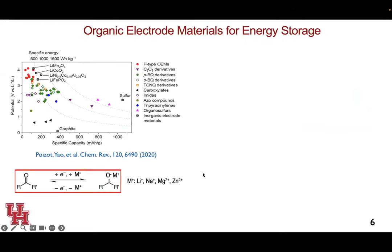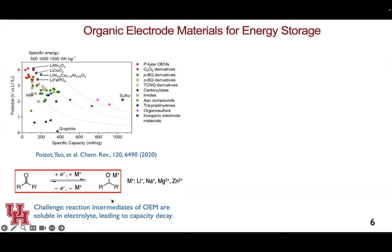The real challenge is how do we integrate organic materials into a device to enable higher device-level or cell-level energy density? Another beauty of organic electrode materials is that they are not sensitive to a particular cation, because of the charge-balancing compensation mechanism. For example, quinone-based materials can be reversibly reduced and oxidized, and almost any cation — lithium, sodium, magnesium, zinc — can be used to compensate the charge. So you don't have to redesign a new host material for different cations. The key challenge, however, is that some reaction intermediates are soluble in traditional liquid electrolytes, leading to capacity decay and short cycle life.